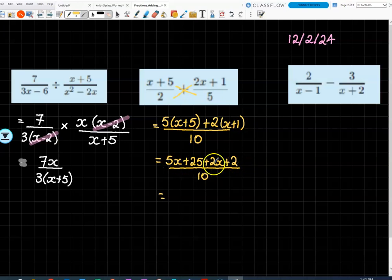So gather your like terms. We get 7x. 25 plus 2 is 27. There is no common factor on the top line. There is no common factor on the bottom line. And so bang, that's it. We leave it. Nice? Yeah.